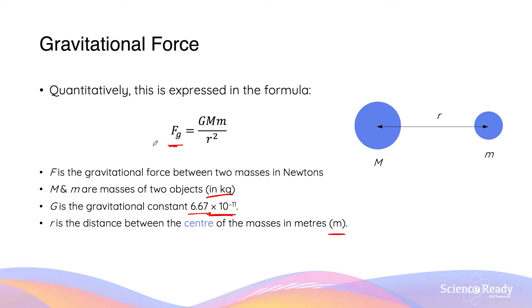The equation clearly outlines the relationship between the gravitational force and the masses as well as the distance apart. The gravitational force is directly proportional to the product of the two masses — that is, if the masses are heavier, the magnitude of the gravitational force is stronger. It is also inversely proportional to the distance between the centres of masses squared. So if the distance between the masses is increased, then the gravitational force becomes weaker. They have an inversely proportional relationship.